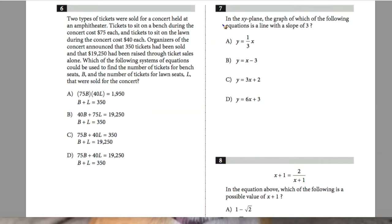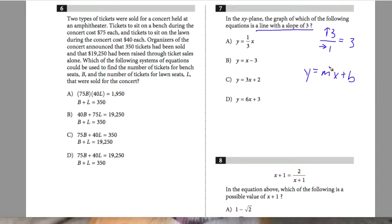Question 7: in the xy-plane, the graph of which equation is a line with a slope of 3? A slope of 3 means a rise of 3 over a run of 1. In slope-intercept form y equals mx plus b, the slope appears before x, so it should look like y equals 3x plus b. Answer C is correct, so 7 is C.